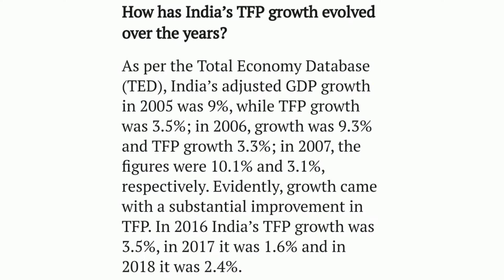How has India's TFP growth evolved over the years? As per the Total Economy Database, TED, India's adjusted GDP growth in 2005 was 9%, while TFP growth was 3.5%. In 2006, growth was 9.3% and TFP growth 3.3%. In 2007, the figures were 10.1% and 3.1%, respectively. Evidently, growth came with a substantial improvement in TFP.